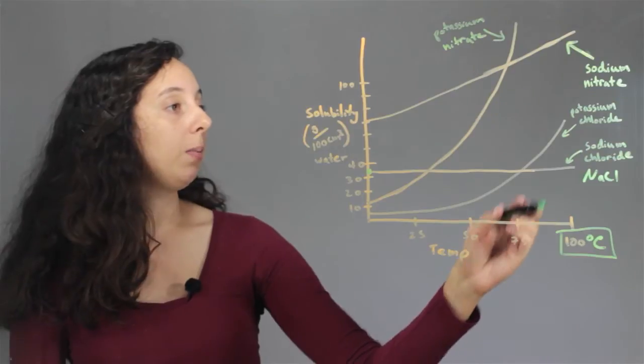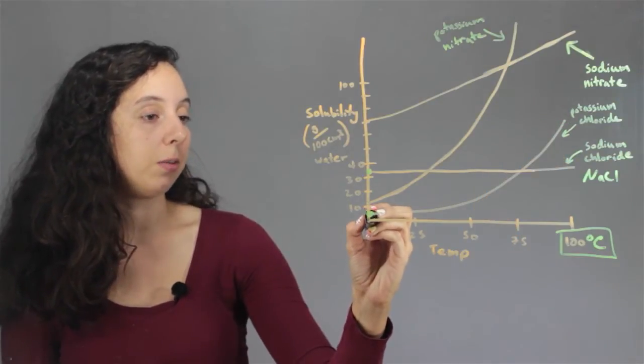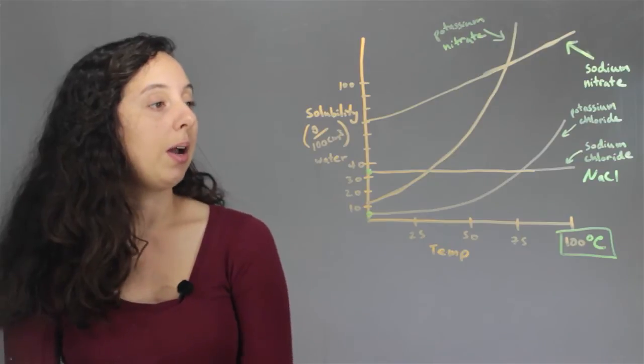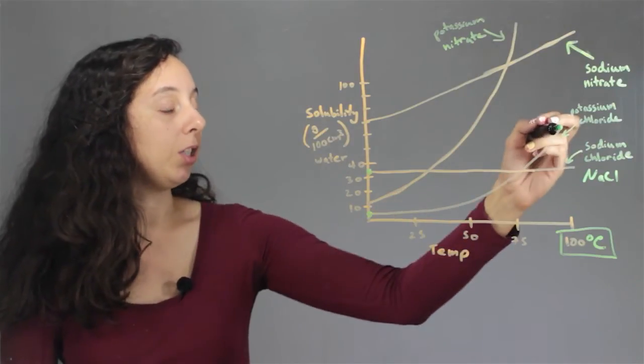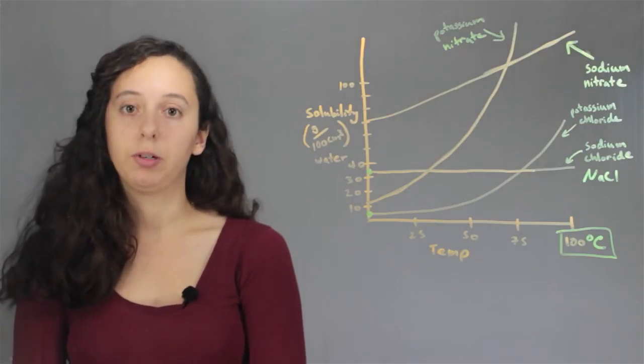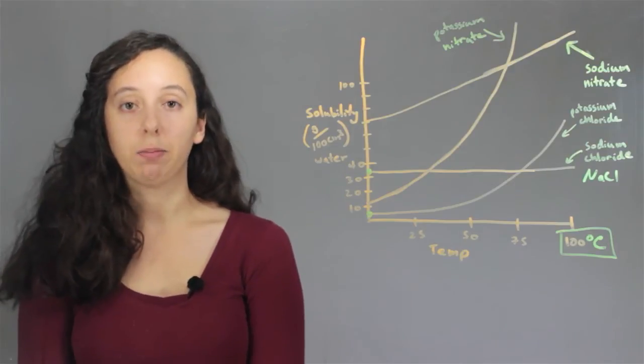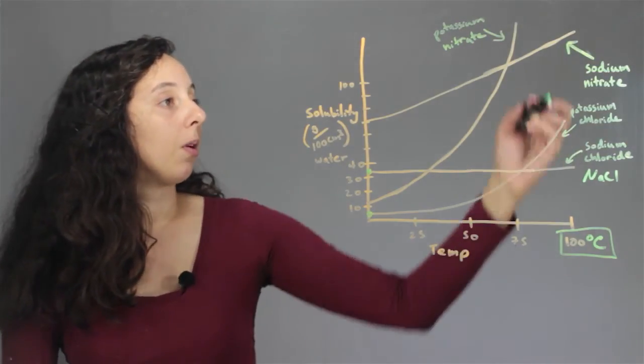And so another one, potassium chloride. Now this originally starts out with a lower solubility than salt, but it's able to completely rise by the time we get to 100 degrees Celsius. And it would be pretty hard to predict these curves. We get all of this just from data and things that people have done.